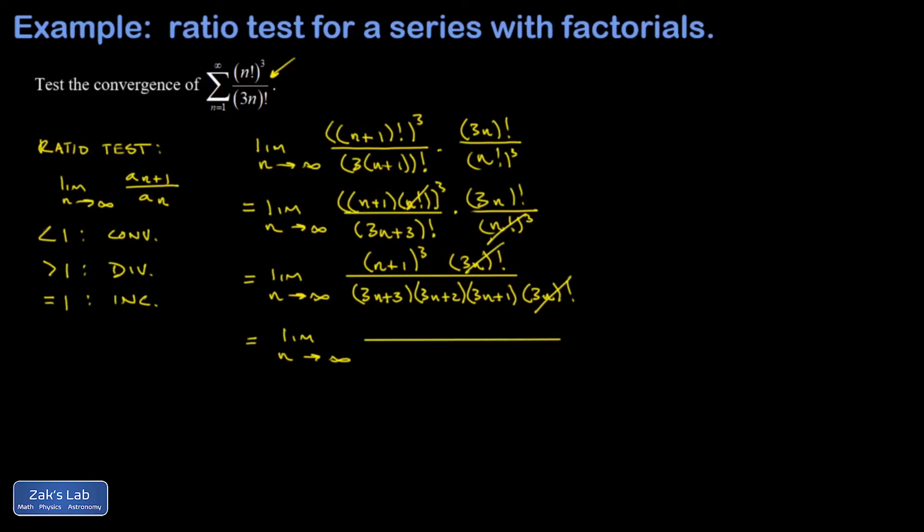I'm left with the large n limit of (n+1)³ divided by these three binomials multiplied in the denominator. Now there's no reason to expand all this stuff precisely because I know the highest power of n is going to dominate the numerator and denominator, so I'm going to try to be a little more brief about it.